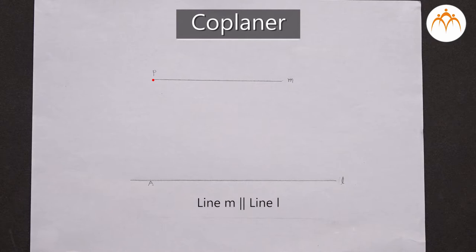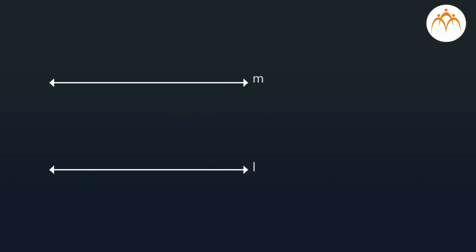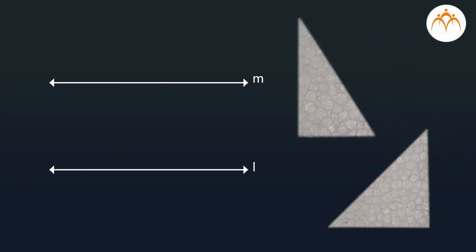An important point here is that it is possible to construct a line M parallel to given line L even if you have set squares with no markings for measurement of distance, because our construction is based on the concept of perpendicular distance between the two lines, and so eventually based on the formation of two congruent interior alternate angles both equal to 90 degrees, and has no relation with the measurement of distance between the two lines.